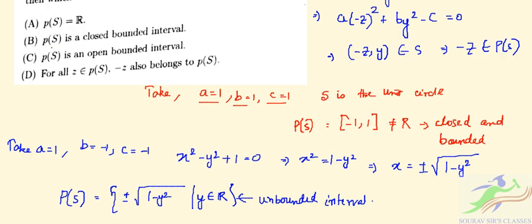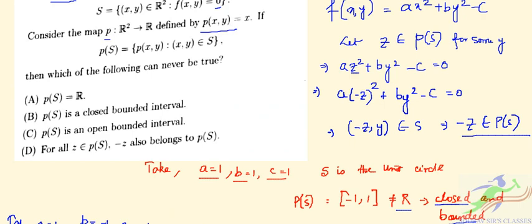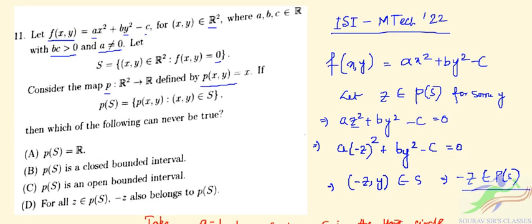So from the options: option D was proved earlier using the symmetry argument. For a = 1, b = 1, c = 1, p(S) is closed and bounded, so we can eliminate options A and C since it is closed and bounded, not open bounded. From option B, p(S) being a closed bounded interval — when we take a = 1, b = -1, c = -1, p(S) is actually a closed unbounded interval. So none of the options are always incorrect in this question.